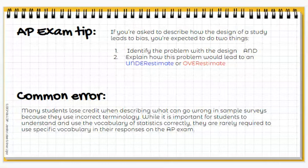Many students lose credit when describing what can go wrong in sample surveys because they use incorrect terminology. While it's important to understand and use the vocabulary of statistics correctly, students are rarely required to use specific vocabulary in their responses. If you're not sure of the right wording, just describe what's going on — that can work as well.